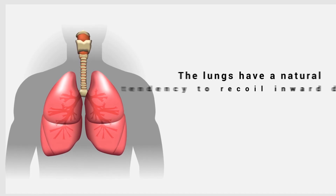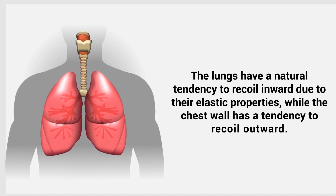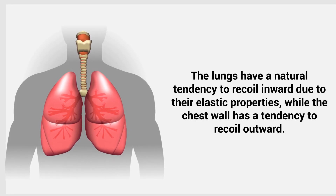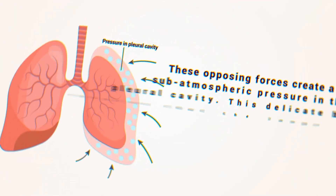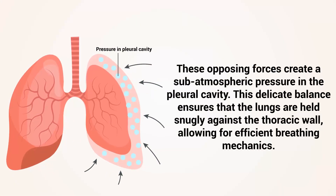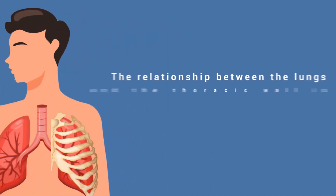This negative pressure is maintained by the elasticity of the lungs and the thoracic wall. The lungs have a natural tendency to recoil inward due to their elastic properties, while the chest wall has a tendency to recoil outward. These opposing forces create a sub-atmospheric pressure in the pleural cavity, and this delicate balance ensures that the lungs are held snugly against the thoracic wall, allowing for efficient breathing mechanics.